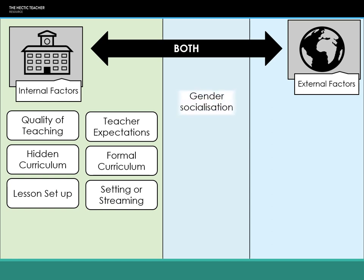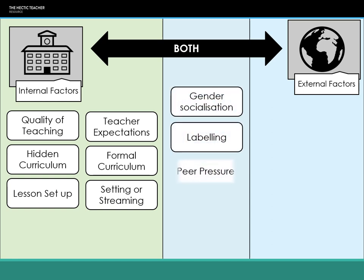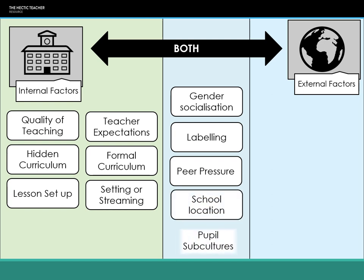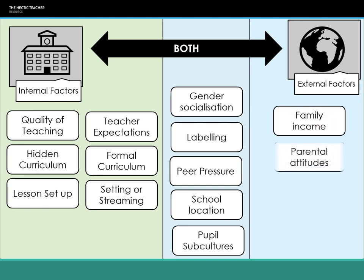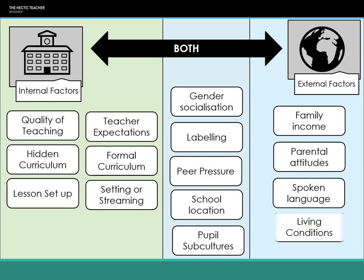Factors that can be both internal and external include gender socialisation — how schools reinforce gender role socialisation as well as how it comes from the home — labelling at both home and in schools, peer pressure, school location, and pupil subcultures, both anti-school and pro-school. External factors include income, parental attitudes, spoken languages, and living conditions — things not always considered to have an impact on a child's education, but which can.